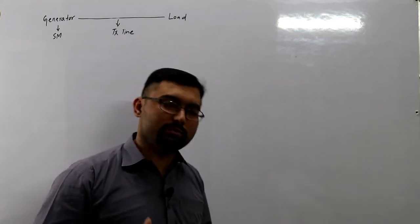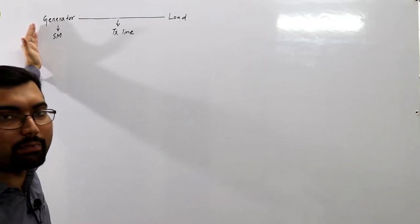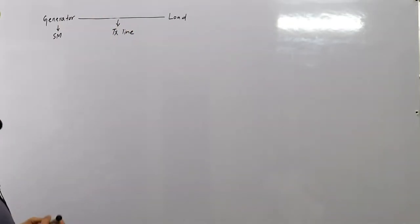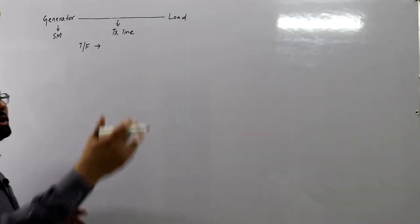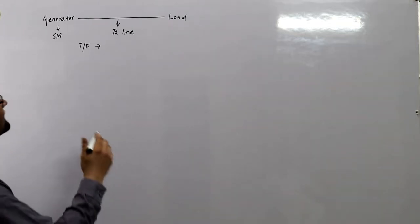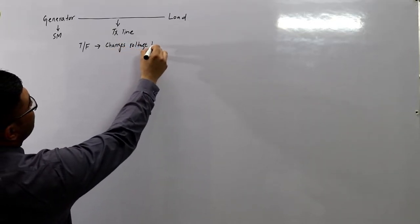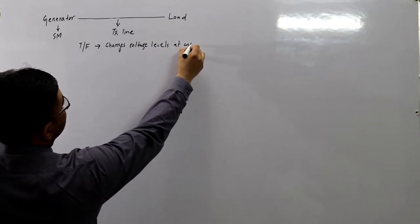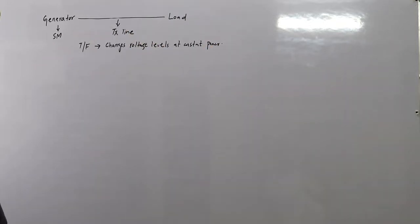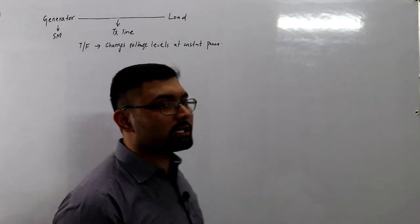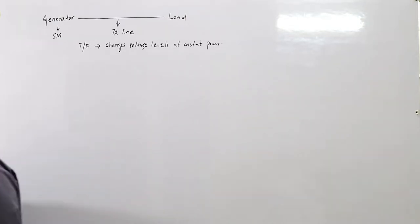Transmission lines can be short or long depending on voltage levels. Generation is at a lower voltage, mostly 11 kV, stepped up by a transformer in between. The transformer changes the voltage level at constant power. It also has the property of isolation — it forms a magnetic link between two circuits, not an electrical one.